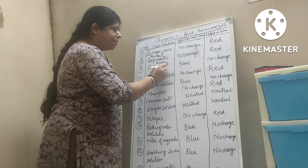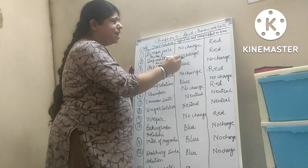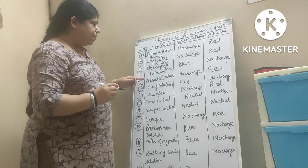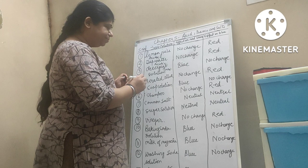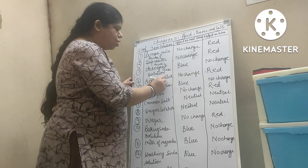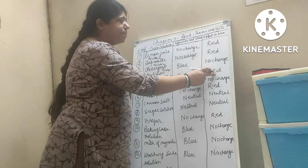Detergent, as we all know, is basic in nature. So it will turn red litmus paper into blue and blue litmus paper — no change. Now, cold drink — the fizzy drink which you drink. These are acidic in nature. So in red litmus paper it will give no change and in blue litmus paper it will turn into red.